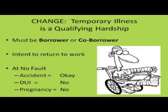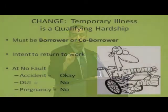Before getting into the underemployment details, I want to tell you about another change you've likely already heard about: a temporary illness can now be considered a qualifying hardship. The only types of temporary illness we're interested in is when the borrower or co-borrower is experiencing the illness. Emphasis is on 'temporary' — the person is not able to do their job now, but they're going to come back to that job. There is the intention of returning back to work.